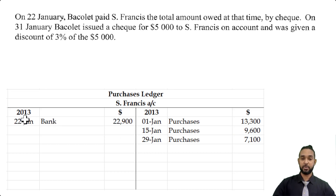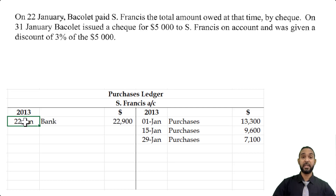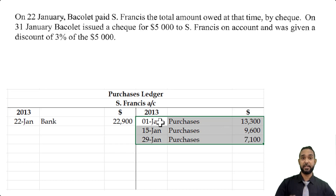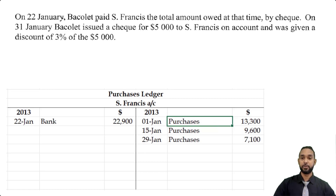That $22,900 goes on the debit side. S. Francis is a creditor, which is a liability. Liabilities: you credit to increase and you debit to decrease. So if you're paying off your liability, you're reducing the total amount you owe — decreasing the liability — and that's why you debit the S. Francis account for $22,900. When you make a credit purchase, you buy goods without paying for them but promise to pay in the future, creating an obligation — that's the definition of a liability — and you credit the liability account to record any increase.